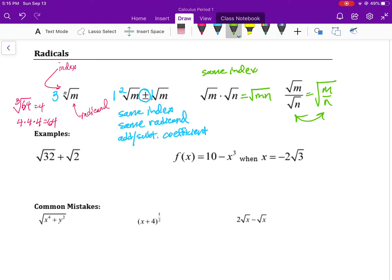So a couple of examples. Square root of 32 plus the square root of 2. We'll remind ourselves that this is combining, so we need the same radicand. But here we have a radicand of 32, so what we need to do is rewrite it.